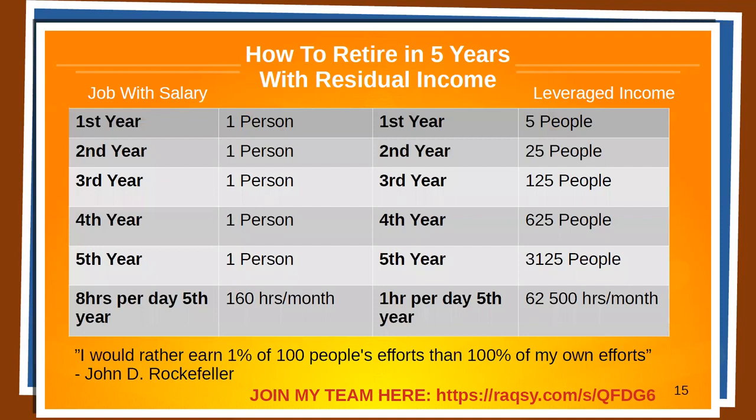How is it possible to retire in five years with residual income? On the left we have someone working a straight salary, and on the right someone building leveraged income. With just a salary, it's the same every year — you get paid for 160 hours per month. But as we saw in the earlier example, someone built a team of 7,000 people in six months — though most people won't be able to do that.